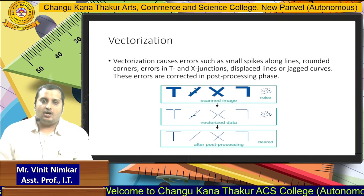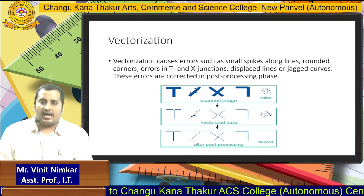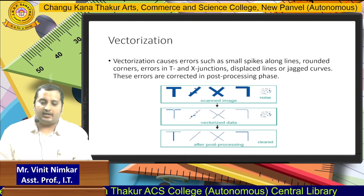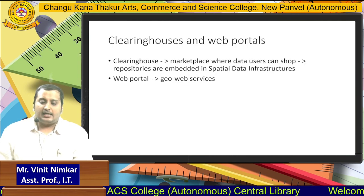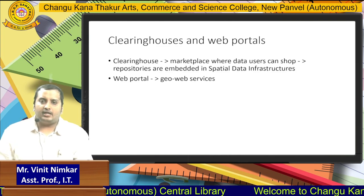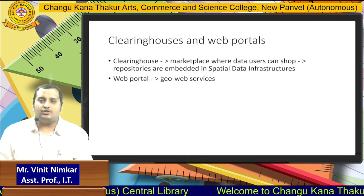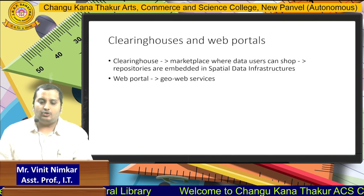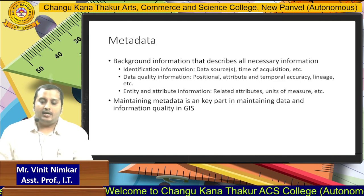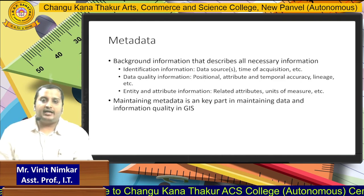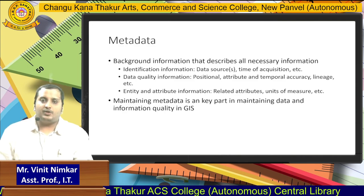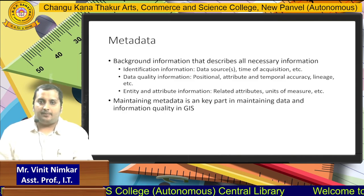Some blotted inks or unwanted figures appear during the process of scanning, which we can see in the vectorization process. Clearinghouses and web portals are repositories where we can store this data and later use it. Metadata, as we know, is data about data. Metadata tells us about the data — from which source it has been acquired and from which timeline it has been captured.